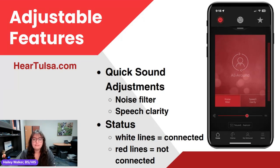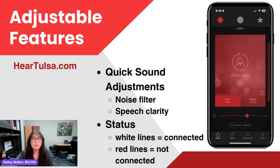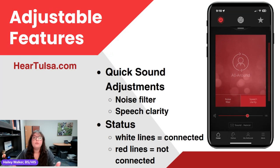Here are those screenshots. We see the all around program. We also have two buttons underneath it — noise filter and speech clarity. These should be on almost all programs except custom programs. When we want the noise filter on, just tap it and it turns into a bright red color. Speech clarity works the same way — tap it and when it's bright red, it's on. To turn it off, tap on that same button. Note that you can't have both noise filter and speech clarity on at the same time.